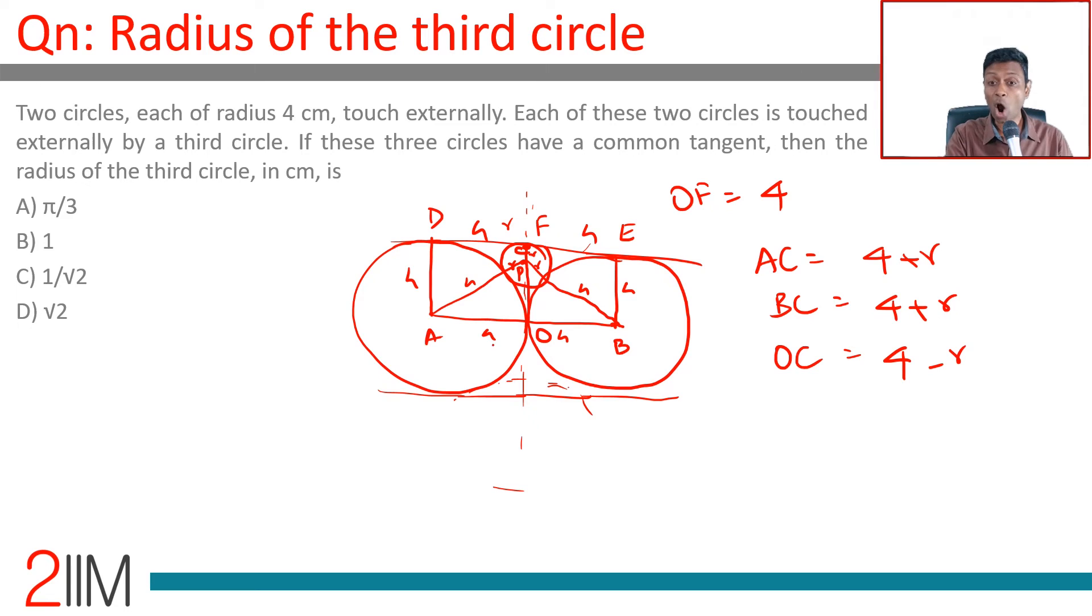We need to somehow find out CP, which is r, or OP. In all of these questions, somewhere along the line Mr. Pythagoras is going to come into play. See if we can incorporate Pythagorean theorem somewhere. This lovely triangle POB gives us an opening.